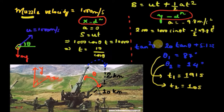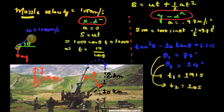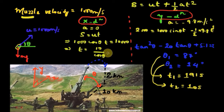In the vertical direction, the acceleration is -9.8 m/s² acting downward in the negative y direction. The vertical displacement s is 2 kilometers, which is 2000 meters. Applying the kinematic equation in the vertical direction: 2000 = 1000·sin(theta)·t − ½ × 9.8 × t². Substituting the value of t = 10/cos(theta) obtained from the horizontal analysis and performing the trigonometry gives a simplified equation.